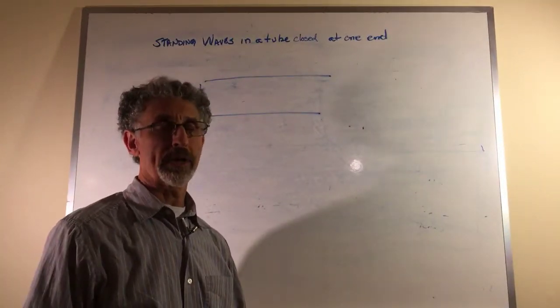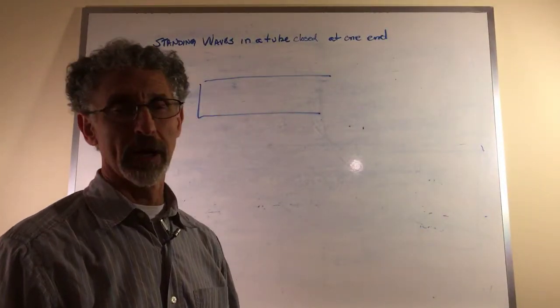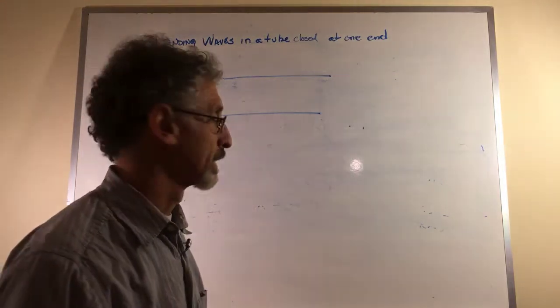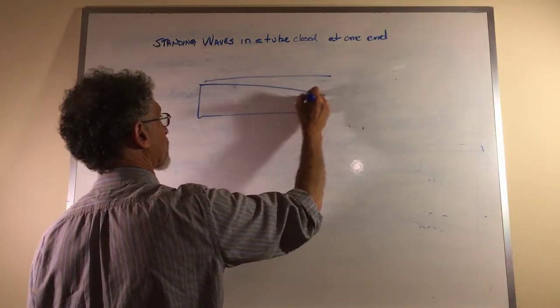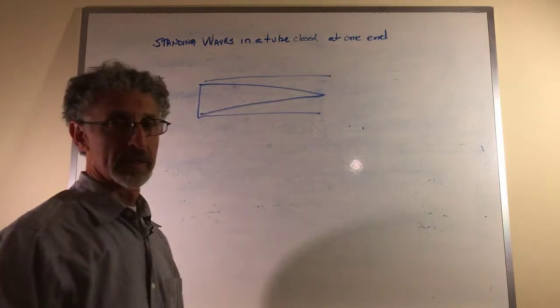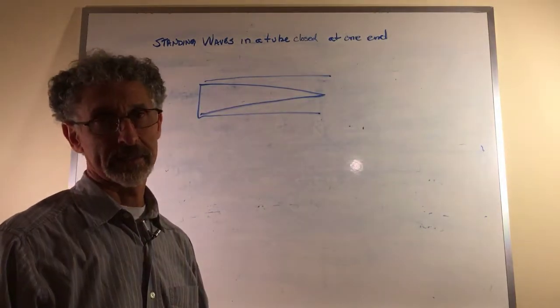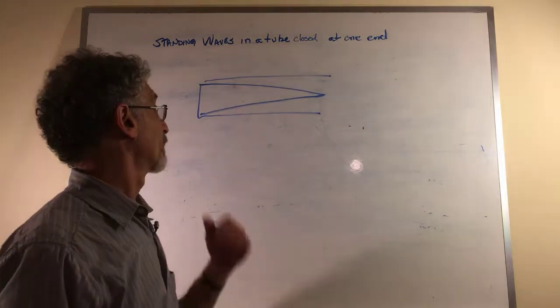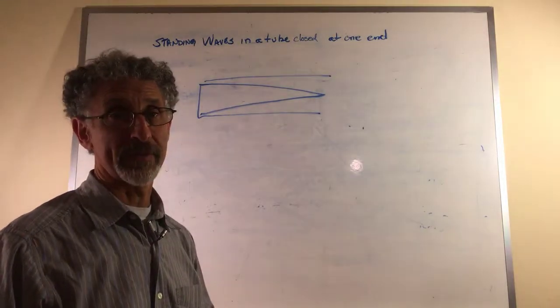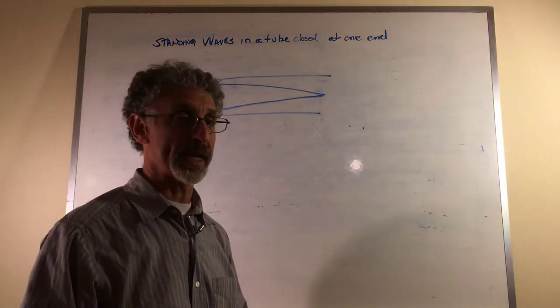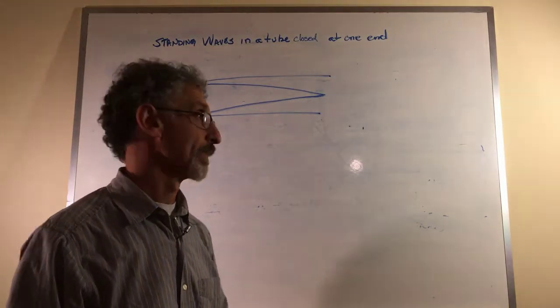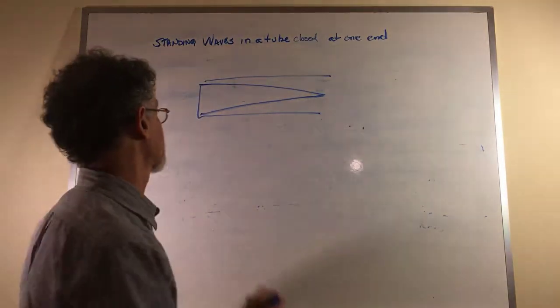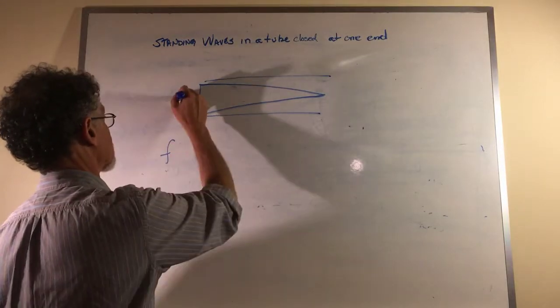Let's look at one other interesting thing about a tube closed at one end. For our first harmonic, we have a quarter of a wave. A tube closed at one end is known as a quarter wave resonator. Let's go to the second harmonic. This is F1. This is F2.